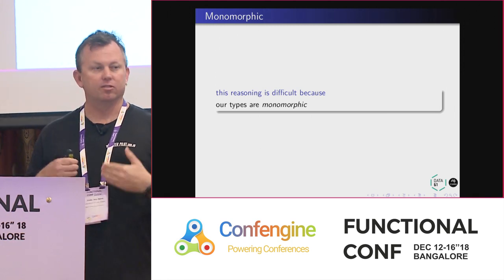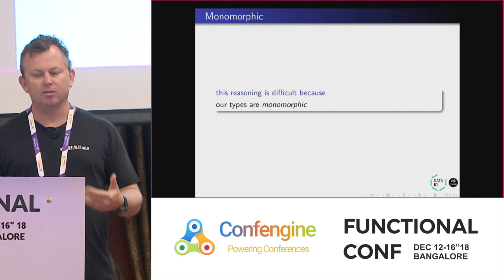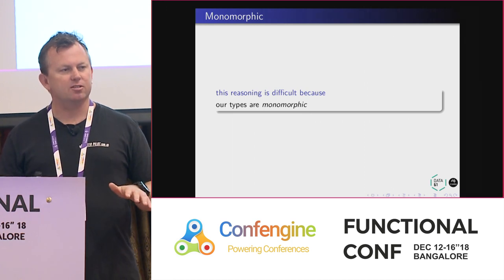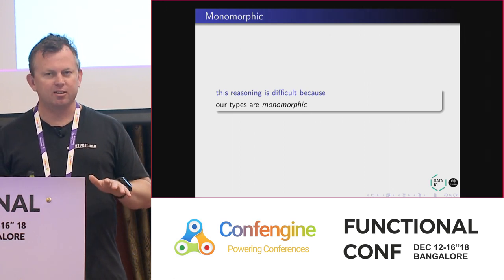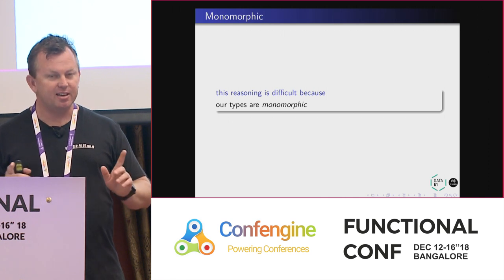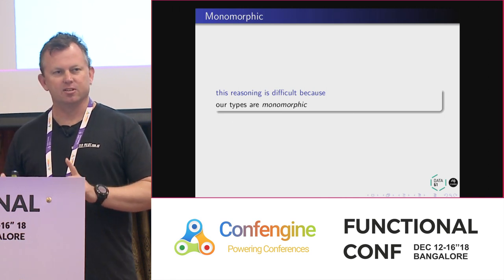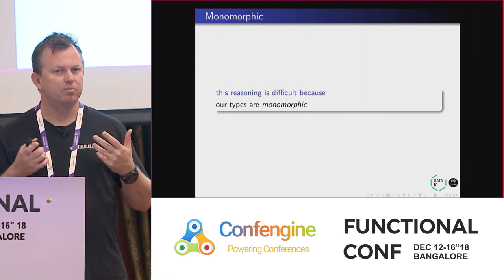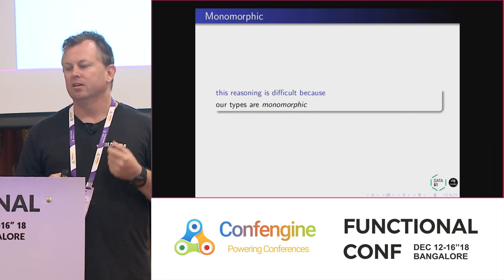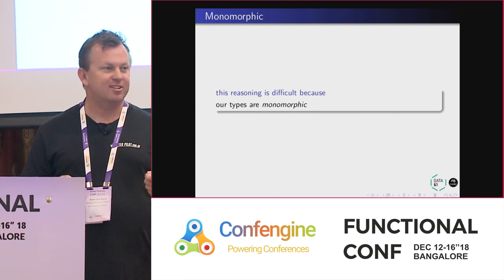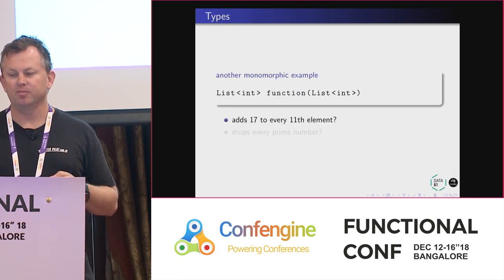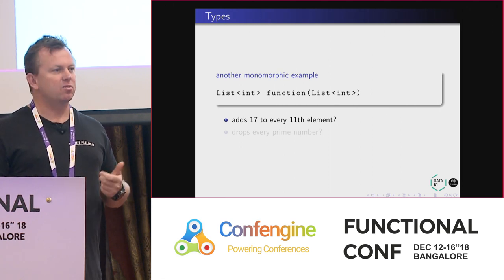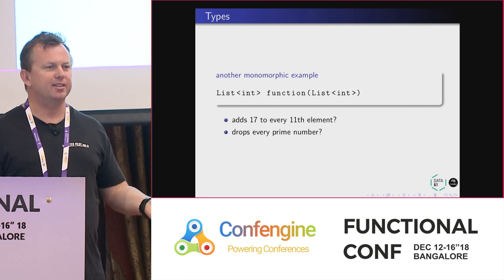I want to address a concern I often hear — that when you write very polymorphic types they're hard to read. I want to say quite the contrary: they're easier to read, because now I know what the function does. Take a list of A and return a list of A — what does it do? I don't know. But here's an important one written in Java notation.